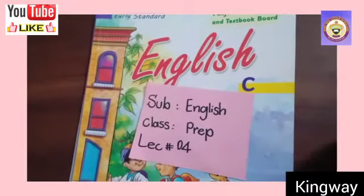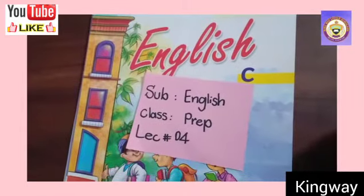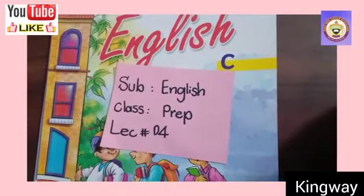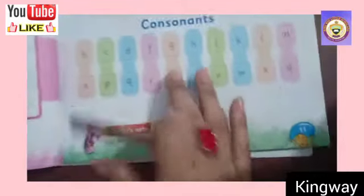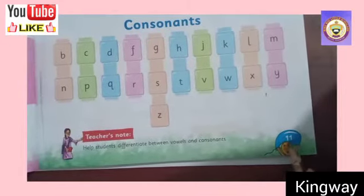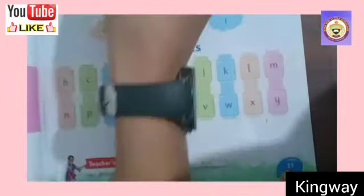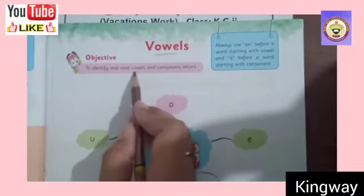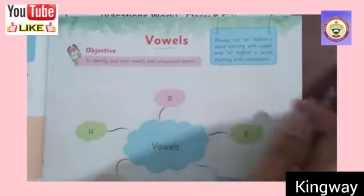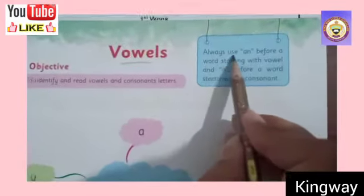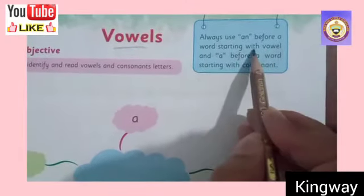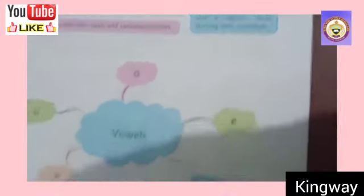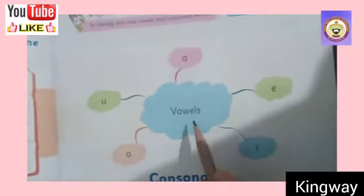Bismillahirrahmanirrahim. Assalamu alaykum dear students and respected parents. Here is ma'am Shazia Khosr from Kingway group of school. Today I'll teach you page number 11. Dear students, open your book and see page number 11, which is the topic: Vowels. The SLOs are to identify and read vowels and consonant letters. To read out this topic, always use 'an' before a word starting with a vowel and 'a' before a word starting with a consonant.